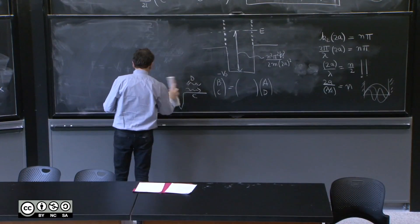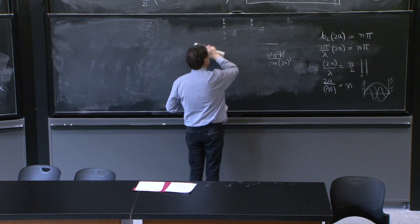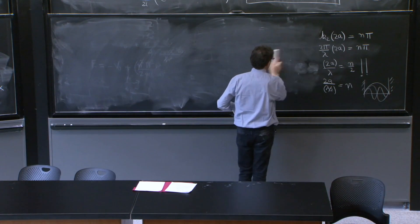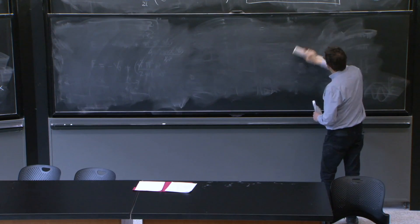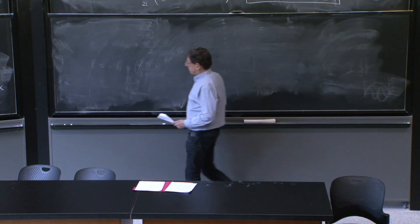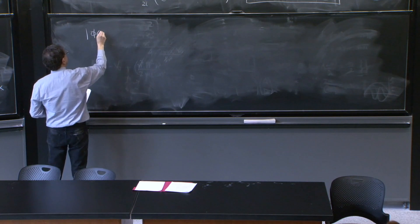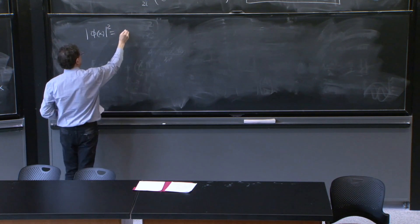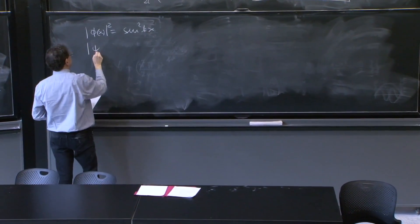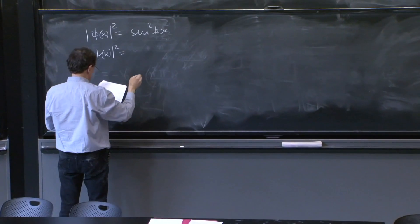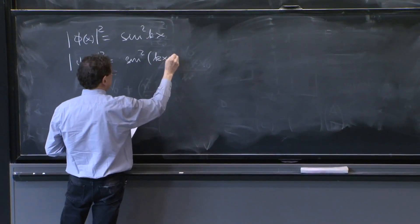So let's look at the magnitude square of those waves that we've already defined here. We have two solutions, one for no potential and one for a real potential. Both are for some finite range potential. So we have phi of x squared is equal to sine squared of kx, and psi of x squared is equal to sine squared of kx plus delta.